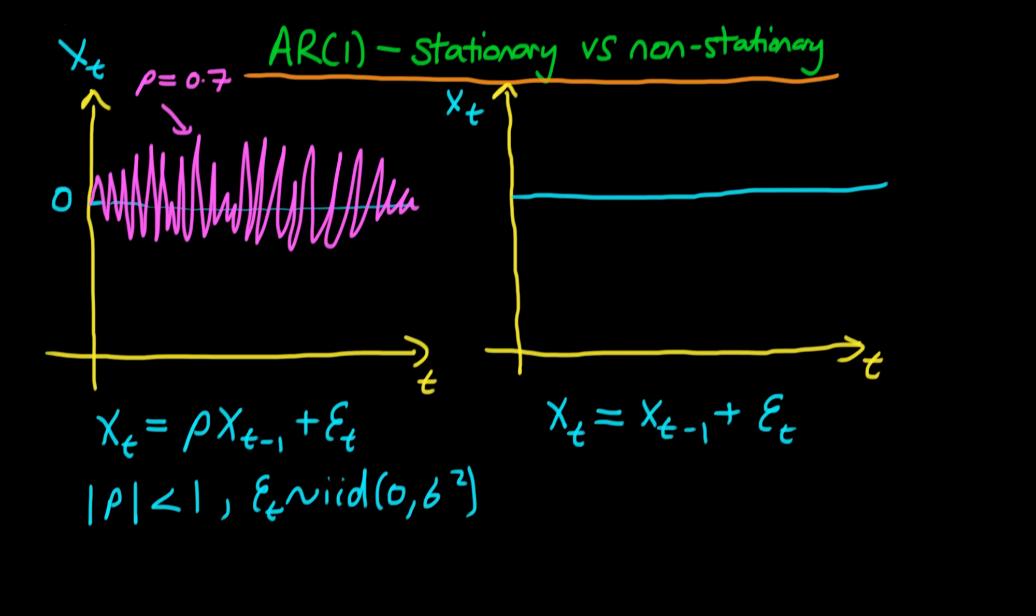As I increase ρ the behavior starts to change a little bit. So let's say I was drawing a graph for ρ equals 0.95. If you draw it then you start to see that the series, even though it still returns to 0 quite regularly, there are these runs of positive and negative Xt which happen across time. So that's perhaps ρ equals 0.95.